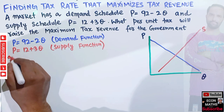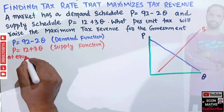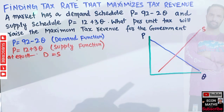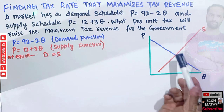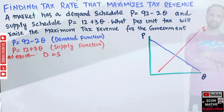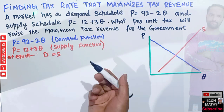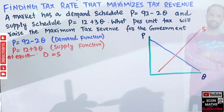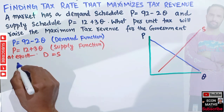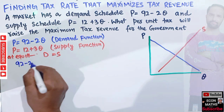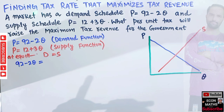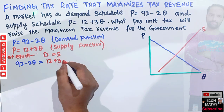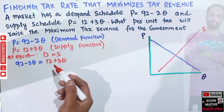Without the tax, the equilibrium will occur at the intersection of the demand and supply functions. At equilibrium, demand equals supply. So we set the demand function equal to the supply function: 92 - 2Q = 12 + 3Q.